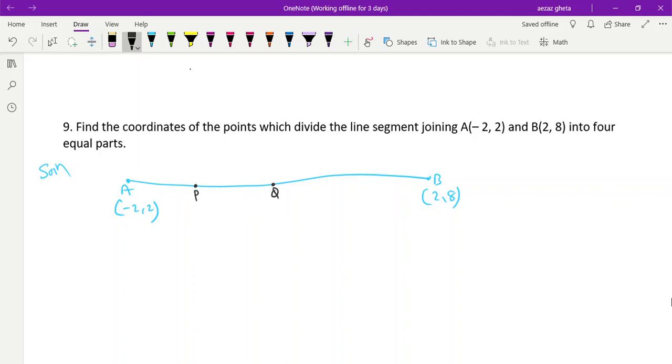If it is 4 equal parts, the ratio will be A to P 1, P to Q 1, Q to R 1, and R to B also 1 ratio. So we need to find all these parts. If I start with Q(x, y), you can say A to Q ratio is 2, Q to B ratio is 2. So two 1s are 2, two 1s are 2.